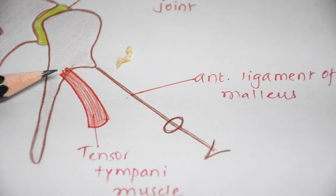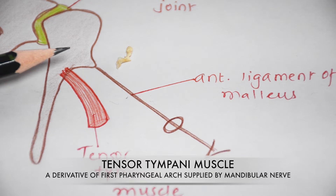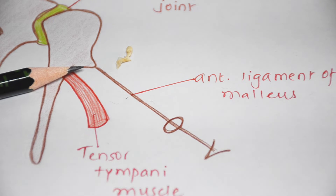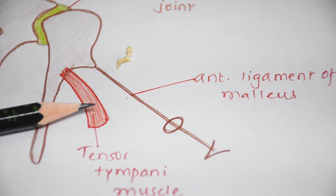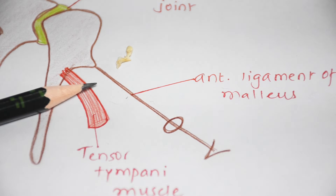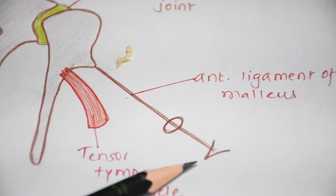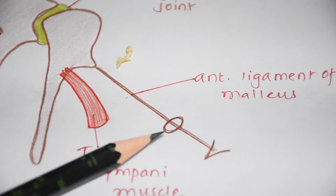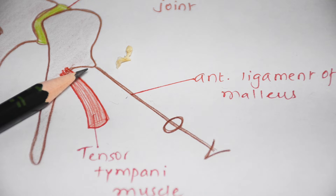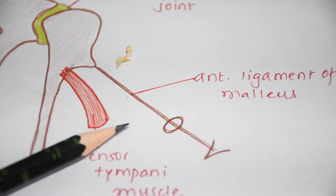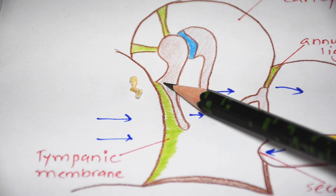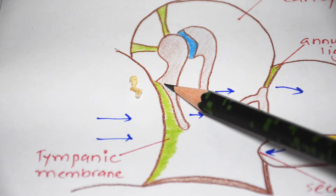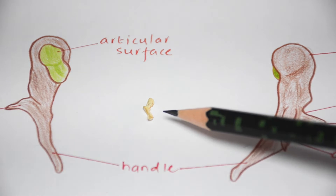The handle is embedded in the fibrous layer of the tympanic membrane. The medial surface of the upper end of the handle receives the insertion of the tendon of tensor tympani muscle. The anterior process is connected by the anterior ligament of malleus, a derivative of the first pharyngeal arch, which connects to the spinosphenoid. This ligament passes through the petrotympanic fissure along with anterior tympanic vessels and chorda tympani. The lateral process projects from the root of the handle and is attached to the upper part of the tympanic sulcus via anterior and posterior malleolar folds.